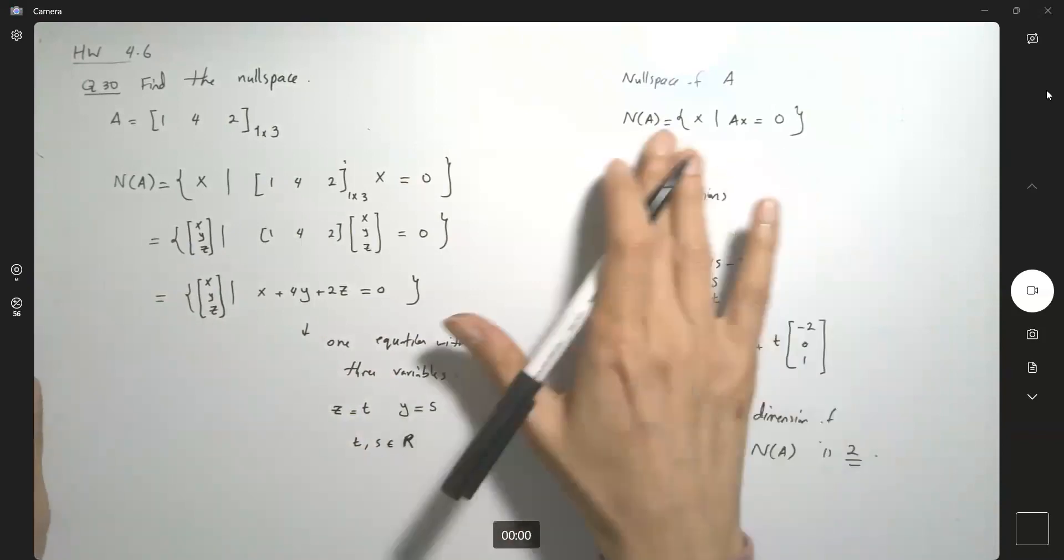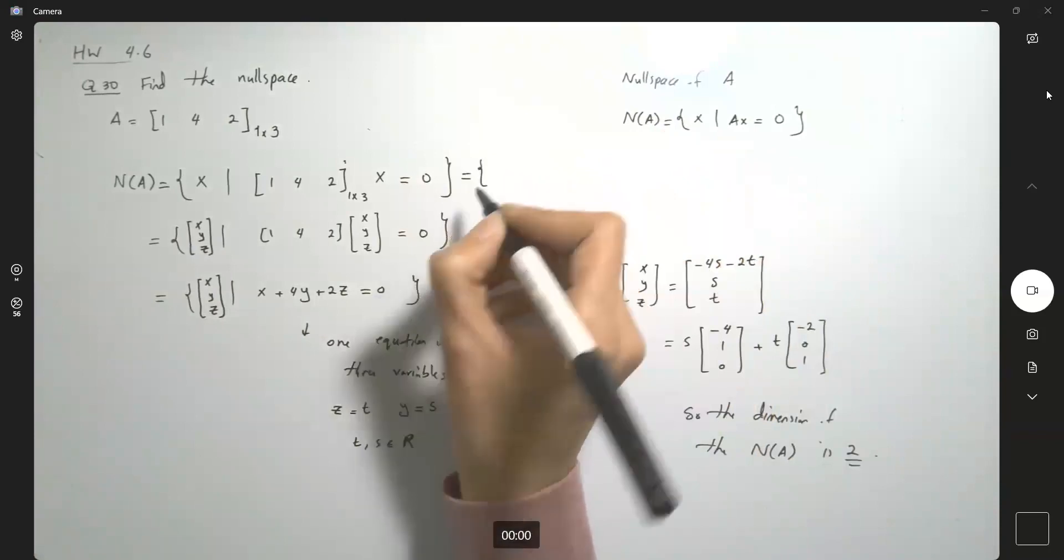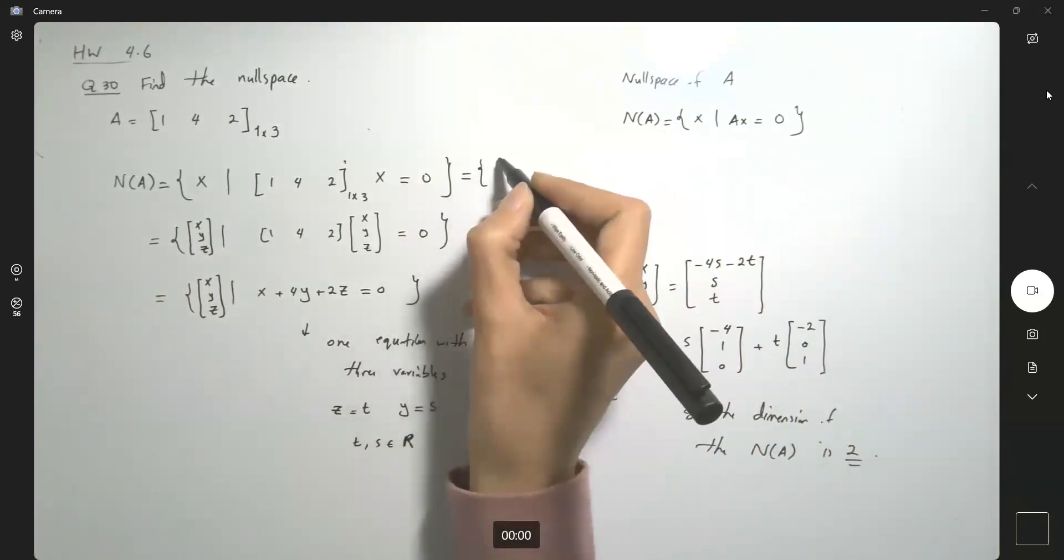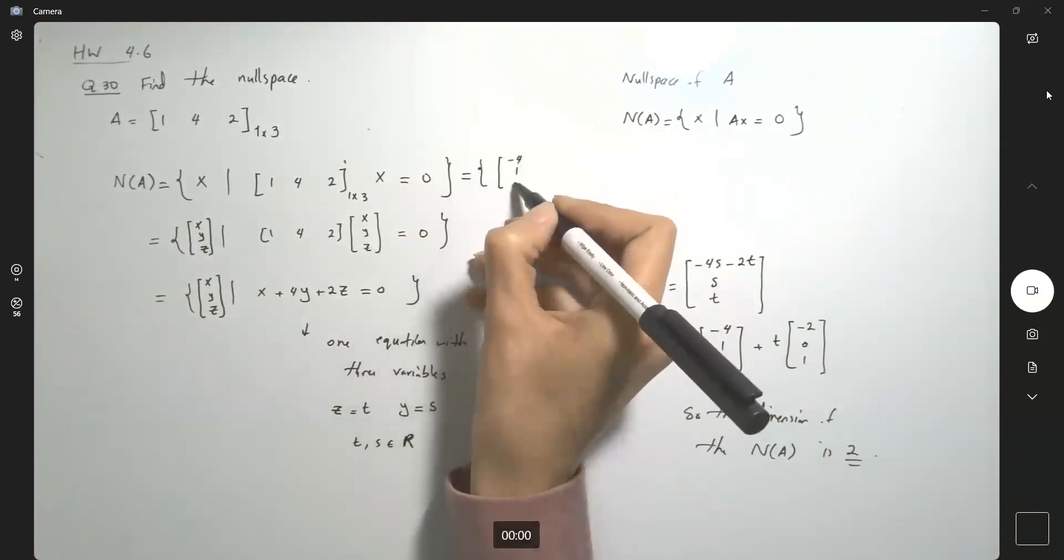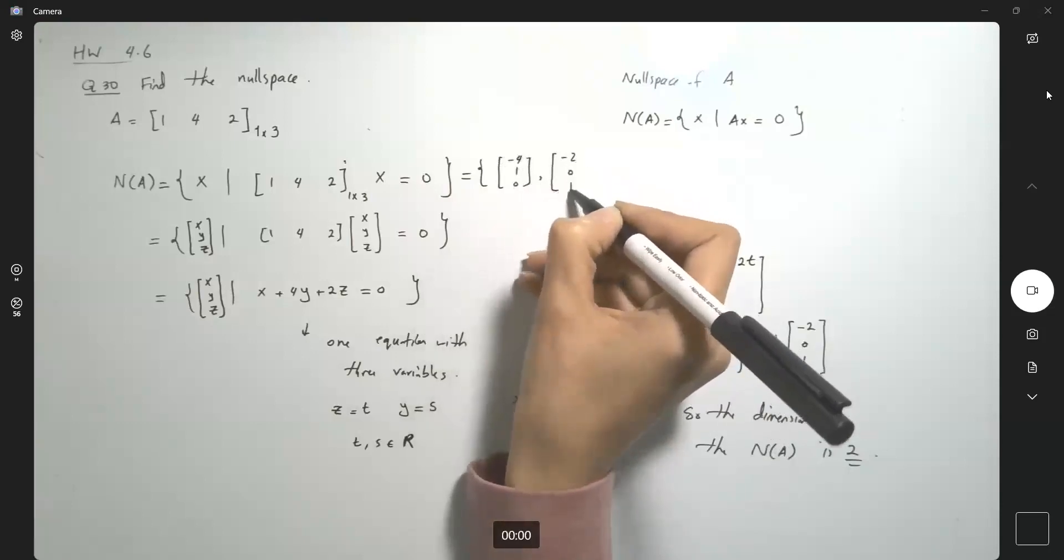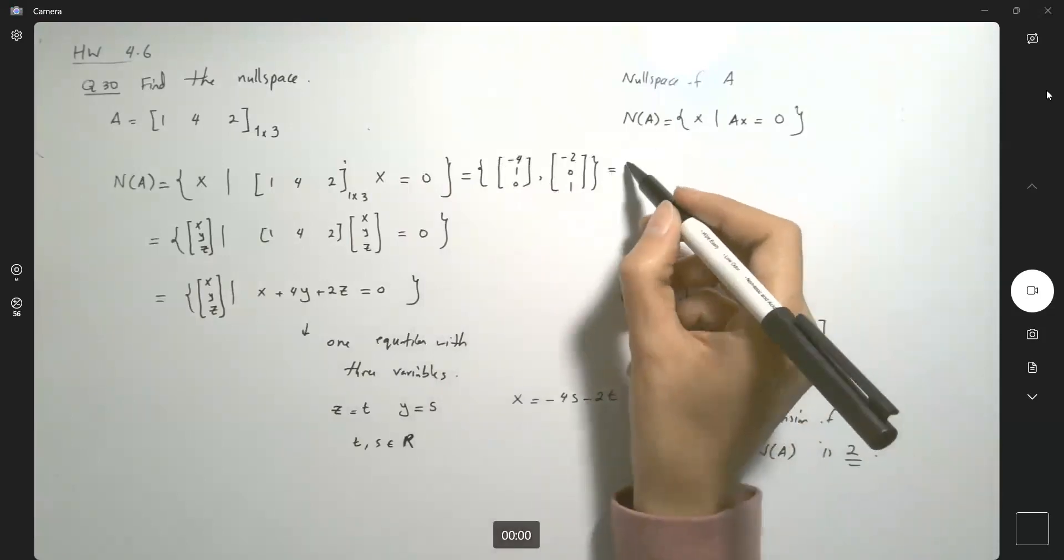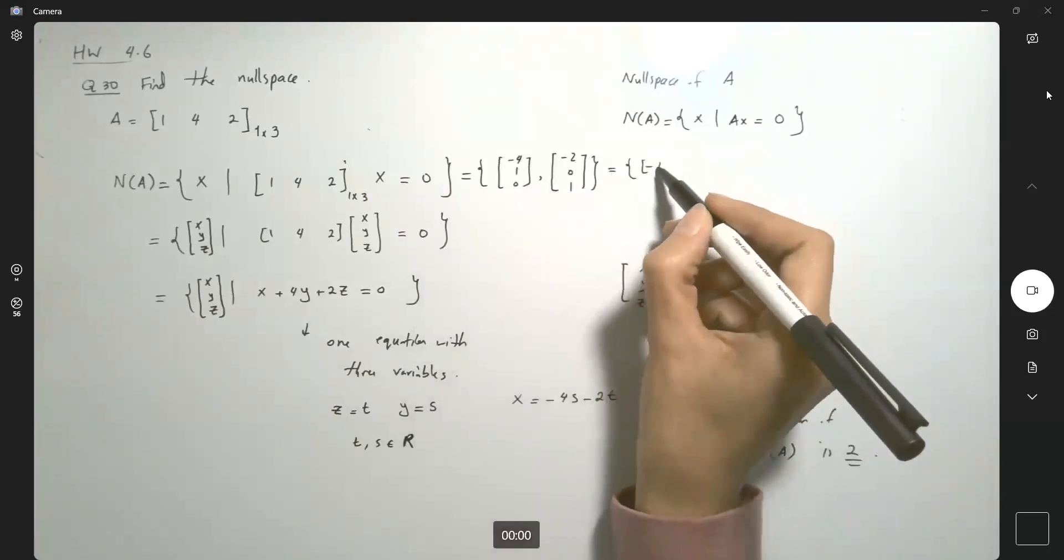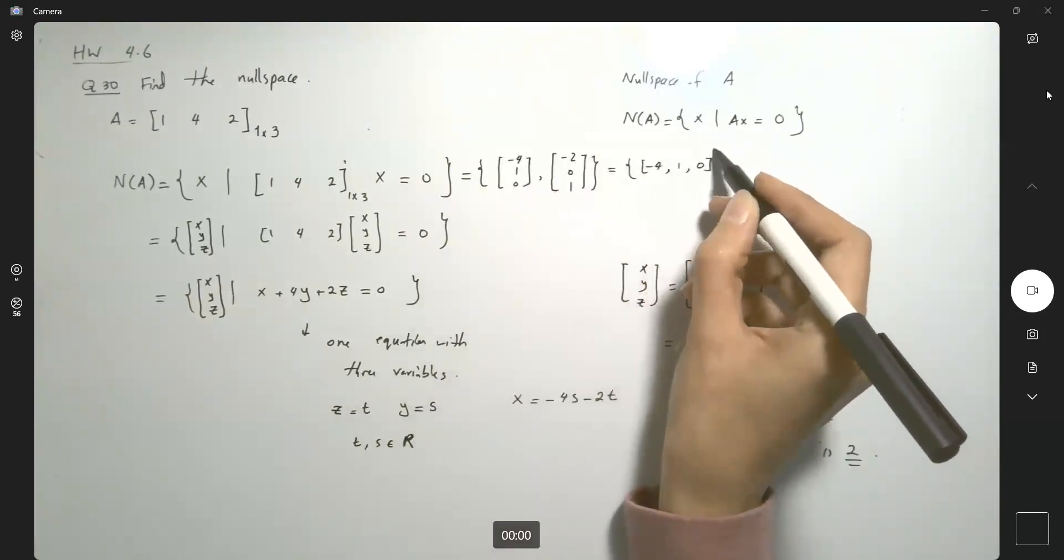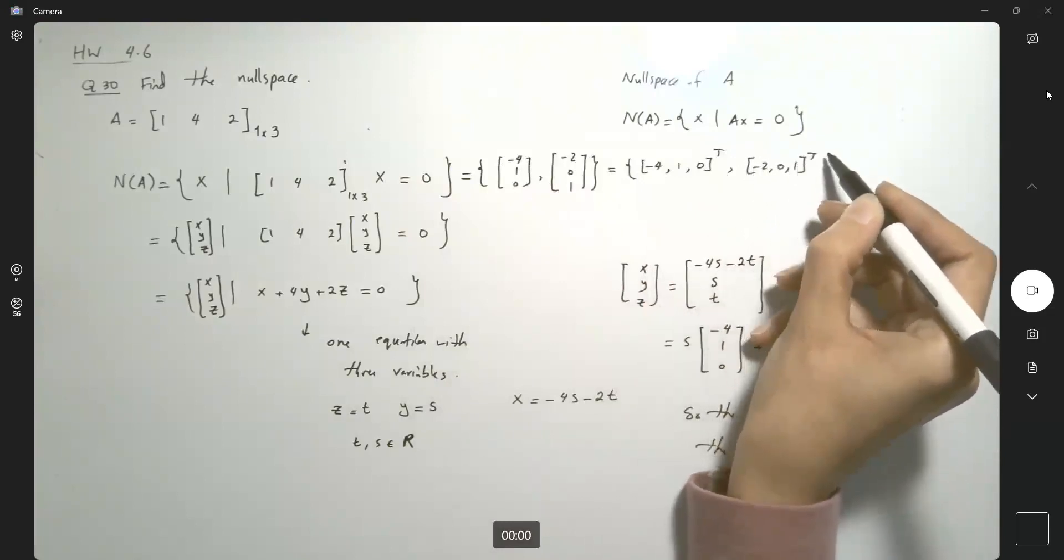So to simplify, you can write this as the set including (-4, 1, 0) and (-2, 0, 1). Or you can use transpose as well if you feel more comfortable. Here you have (-4, 1, 0) transpose and (-2, 0, 1) transpose.